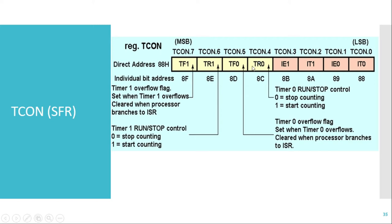In this video we'll concentrate on the upper 4 bits. The MSB bit is TF1, the Timer 1 overflow flag. This bit is normally 0, but whenever Timer 1 overflows, it becomes 1 to indicate overflow. The next bit is TR1, which is used to start Timer 1 — set it to 1 to start and 0 to stop.